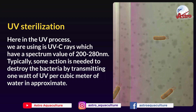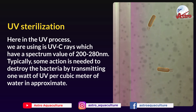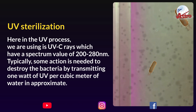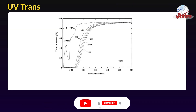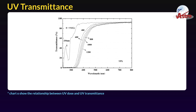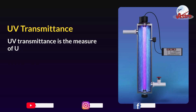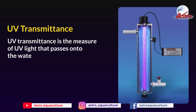Typically, some action is needed to destroy bacteria by transmitting 1 watt of UV per cubic meter of water at approximate UV transmittance. Chart O shows the relationship between UV dose and UV transmittance. The chart shows that when UV transmittance reaches its maximum percentage, the UV dose decreases.